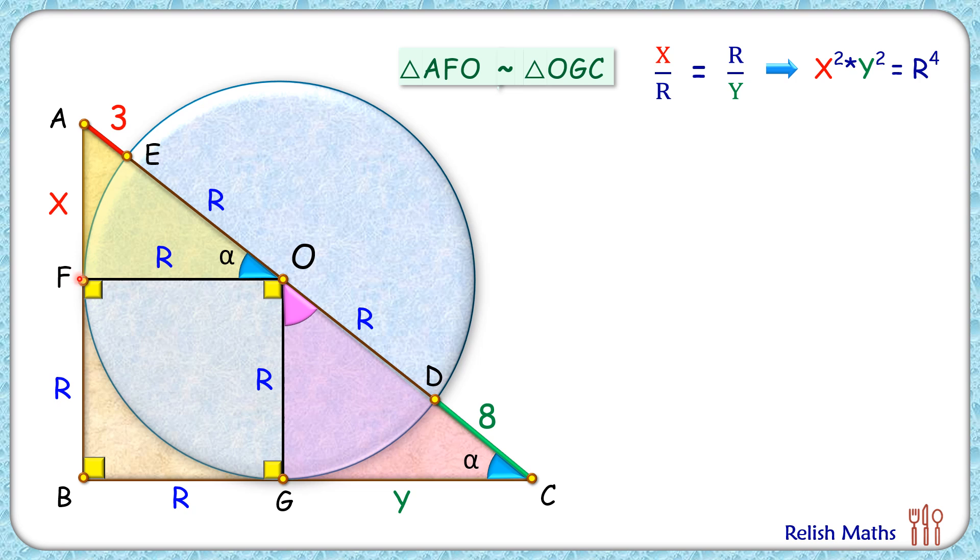If we see from point A, AF is tangent and AD is secant, so applying tangent-secant theorem we'll get AF squared is AE times AD. Putting the values here, AF is x, AE is 3, and AD is 3 plus 2R.